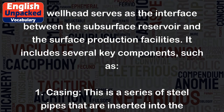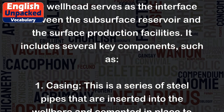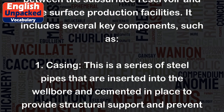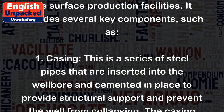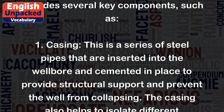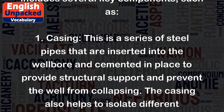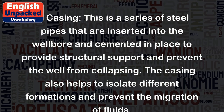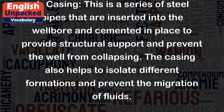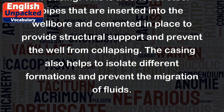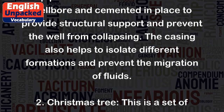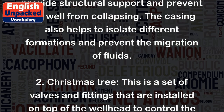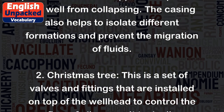It includes several key components, such as: 1. Casing. This is a series of steel pipes that are inserted into the wellbore and cemented in place to provide structural support and prevent the well from collapsing. The casing also helps to isolate different formations and prevent the migration of fluids.